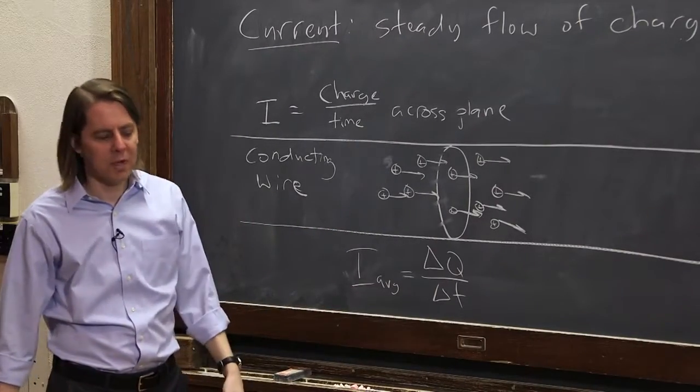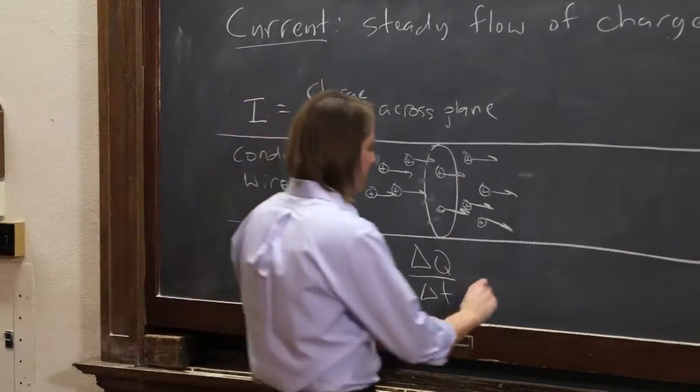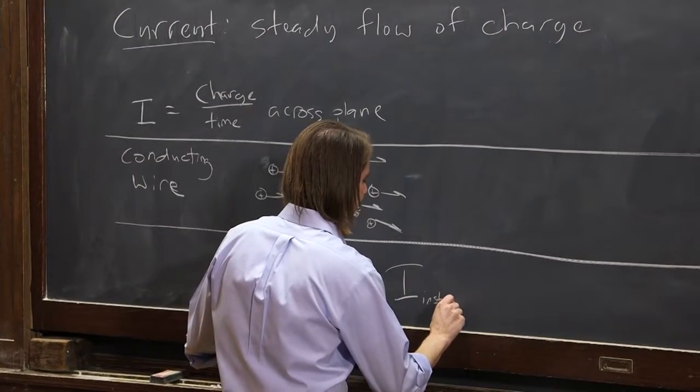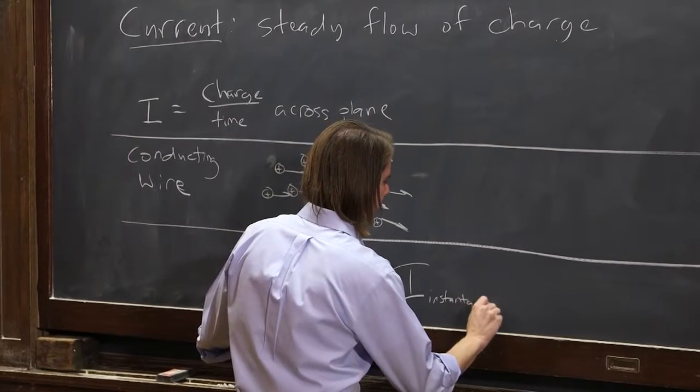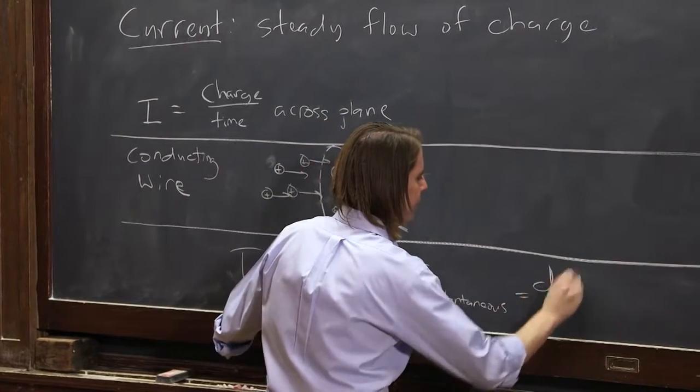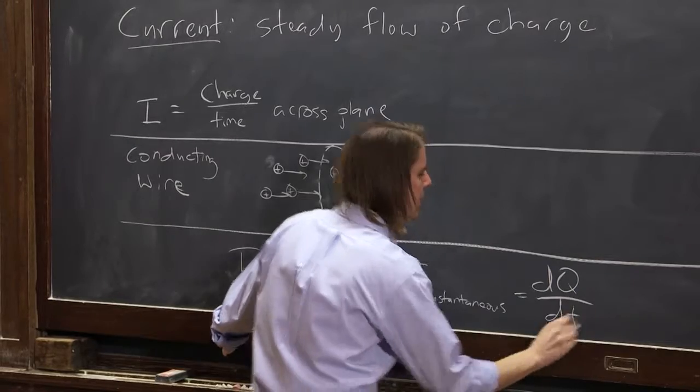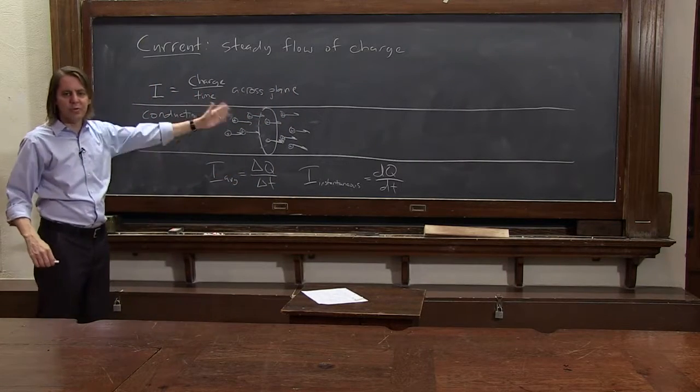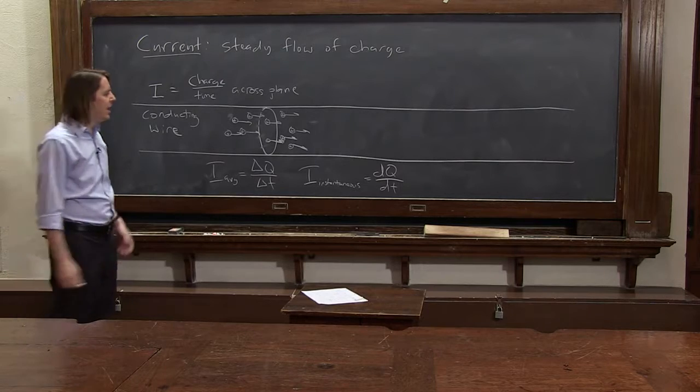There's also the instantaneous current, I instantaneous, and that's the derivative, dQ dt. If you had some expression for the charge as a function of time as it moves across the plane, it would be dQ dt. I'm just showing you both of these.